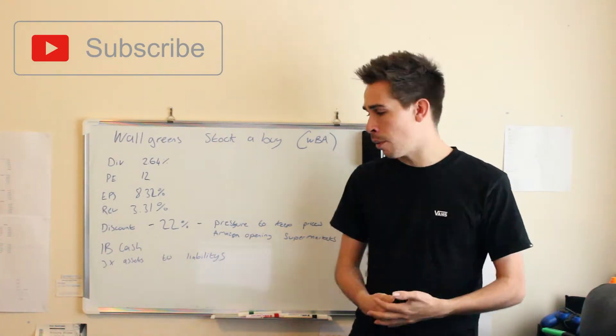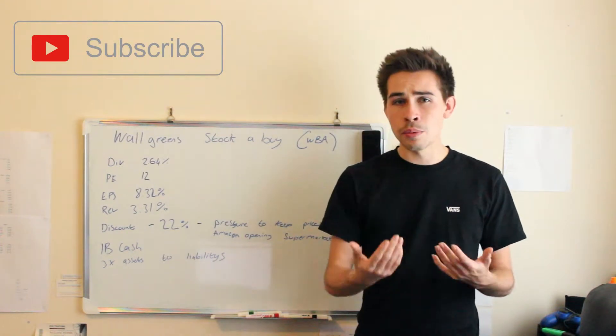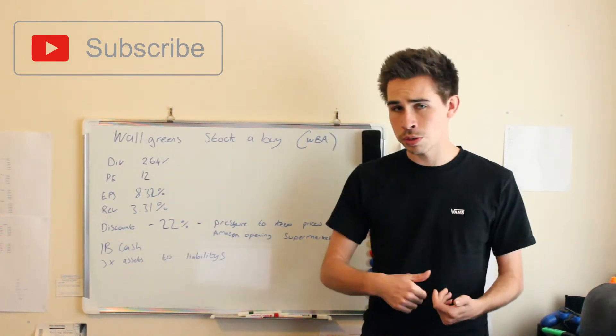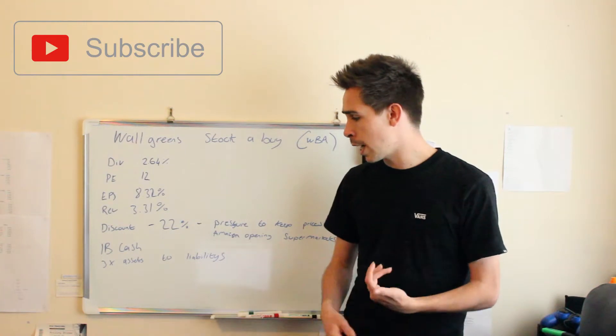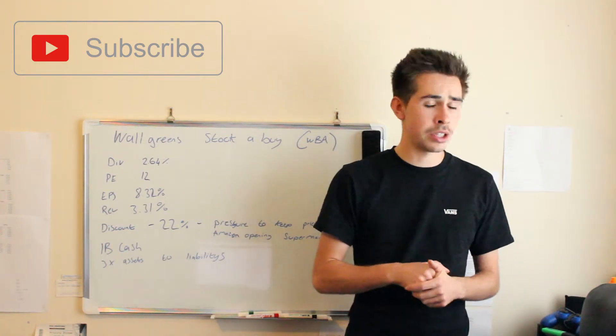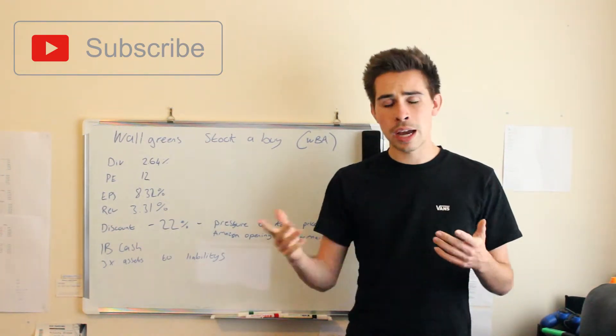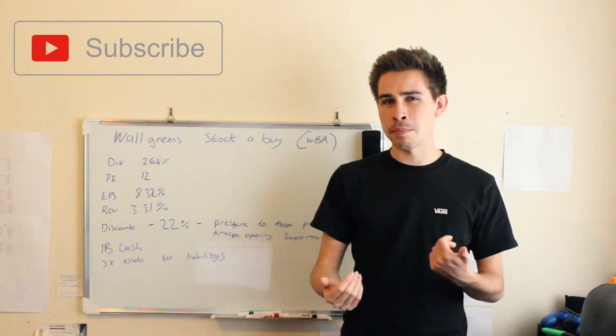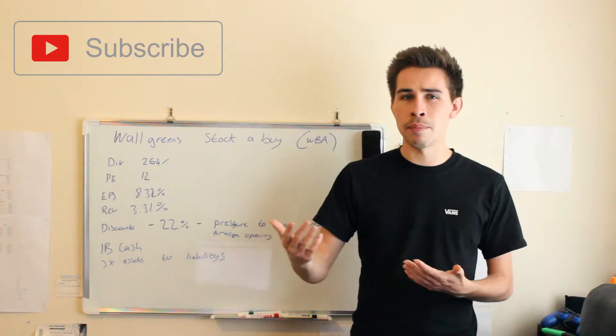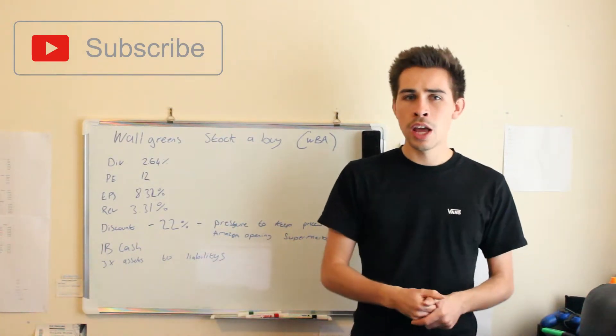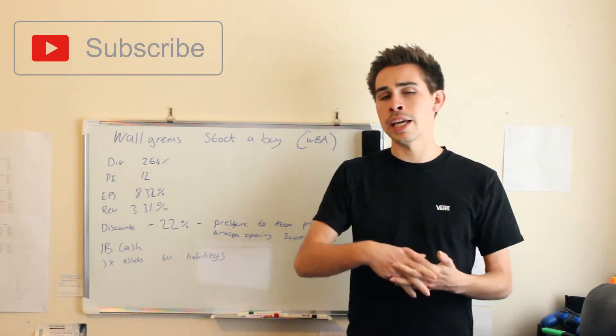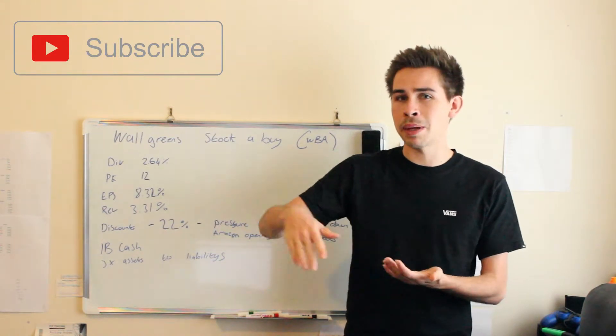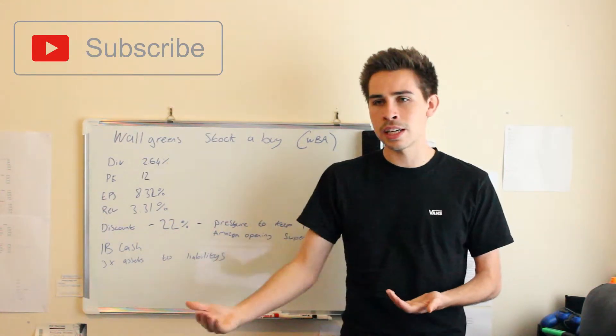Two little things to point out is that the balance sheet on Walgreens is actually pretty good. They're sitting on 1 billion cash, which is pretty good. It's got a 3x assets to liability ratio, which is good. I haven't put this down on the whiteboard, but it has about a 30% payout, so it still has a lot of room to go increasing that dividend. If you're a dividend player, that's what you like - knowing they're easily paying that dividend out and they can easily increase it.